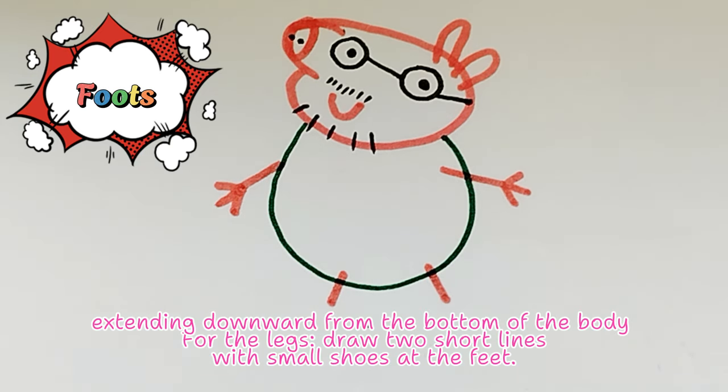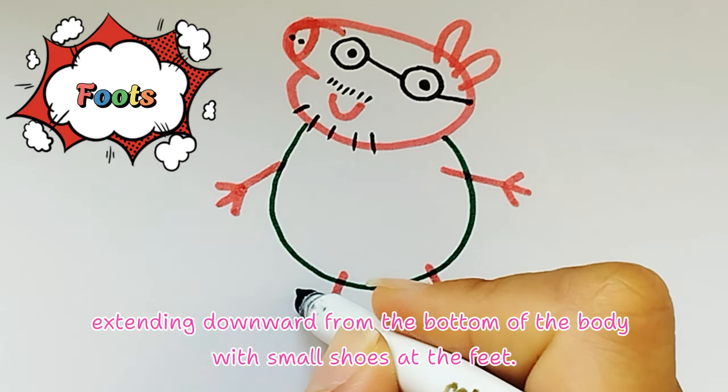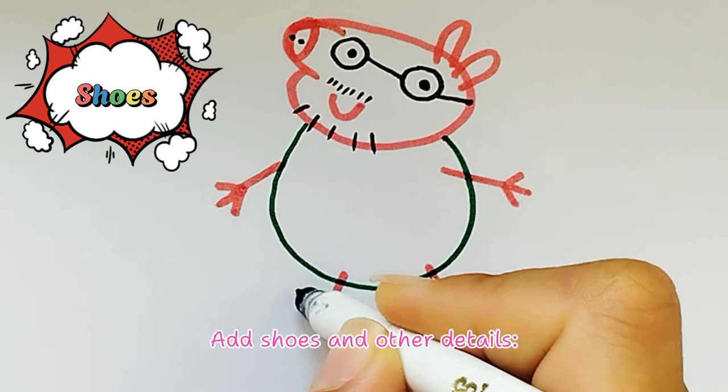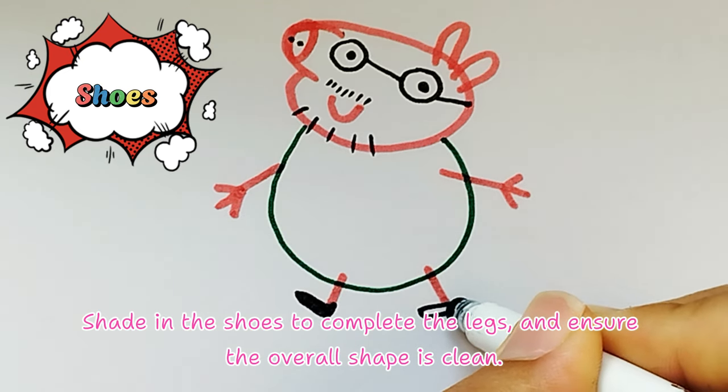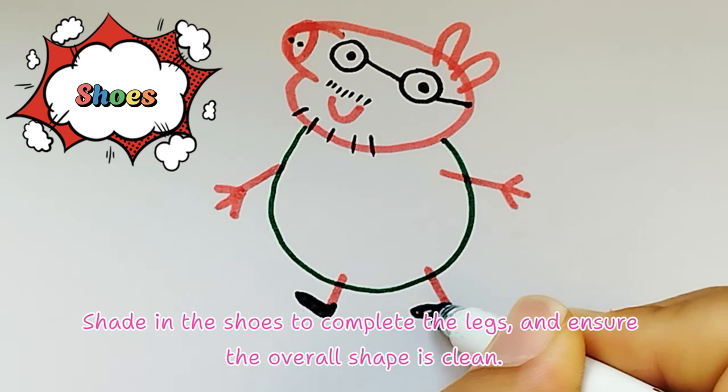For the legs, draw two short lines extending downward from the bottom of the body with small shoes at the feet. Add shoes and other details. Shade in the shoes to complete the legs and ensure the overall shape is clean.